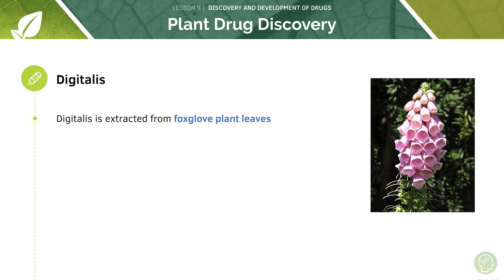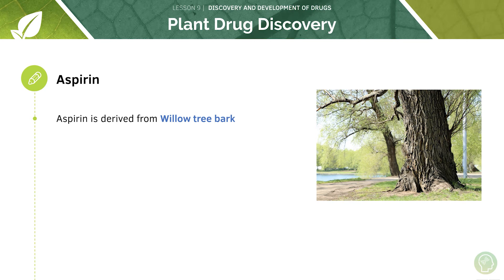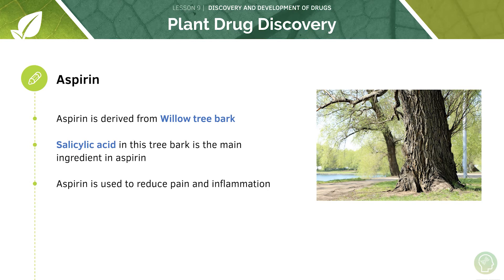Digitalis is extracted from foxglove plant leaves, and digoxin itself is extracted from the plant and used as a drug to stimulate heart muscle and increase heart rate. Similarly, aspirin is derived from willow tree bark — the active component is salicylic acid, found in the bark, which forms the main ingredient in aspirin. Aspirin is used to reduce pain and inflammation. So we've seen two drugs, digoxin and aspirin, each extracted from plants and each used for differing purposes, both very important in the pharmacological industry.